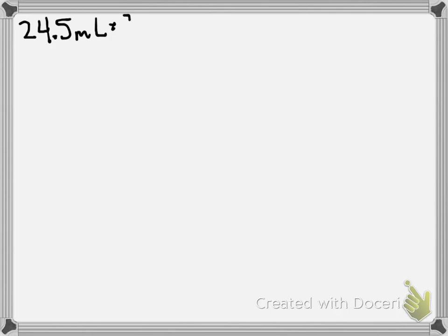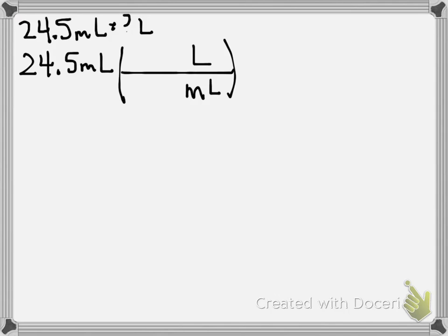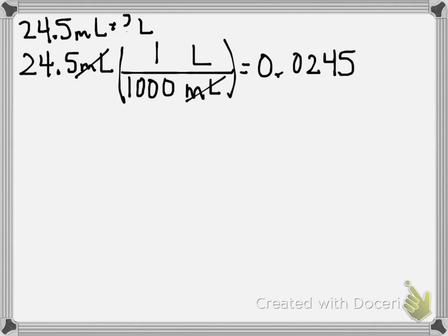Number 11 asks you to make the following conversions. In letter A, we have 24.5 milliliters — we want to know how many liters that is. I start with 24.5 milliliters. Milliliters need to be on the bottom. Liters are on the top. A liter is larger — it's 1,000 because I move three times. My answer is 0.0245 liters.